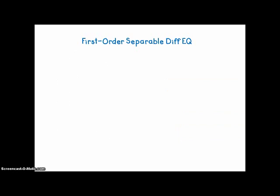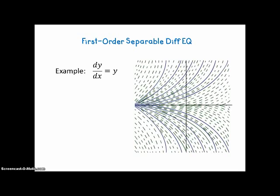We're going to review first-order separable differential equations, which were the only kind studied in your previous course. For example, we could have dy/dx equals y, which is an extremely simple differential equation, but a differential equation nonetheless because it has a derivative in it. Here's a picture of the slope field for that derivative — all the slopes are equal to the y values. There's no change as you move along horizontally, but they change and get steeper as you move vertically.